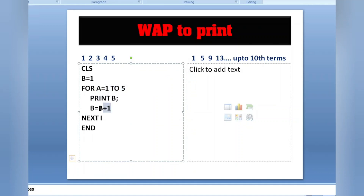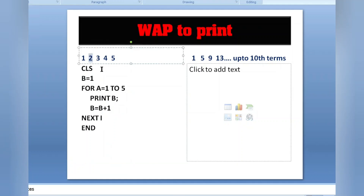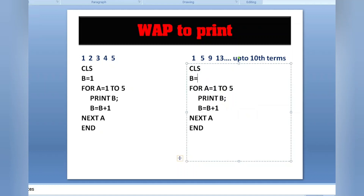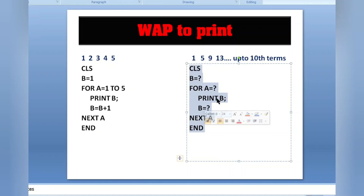So the key points: b equals to the starting value, for loop runs as many times as values are printed, print b inside the loop, then b equals to b plus 1 for the increment. Note: use next a, not next i, because we used a as the loop variable. This is the basic structure — now I'll copy it for the next program.